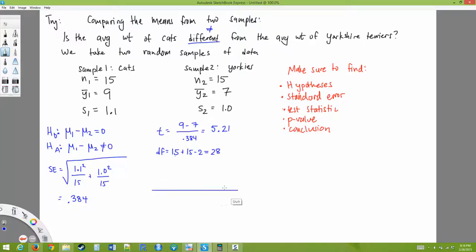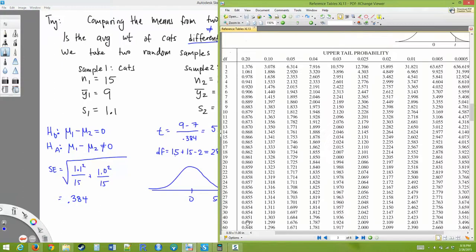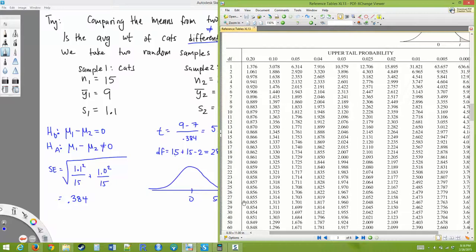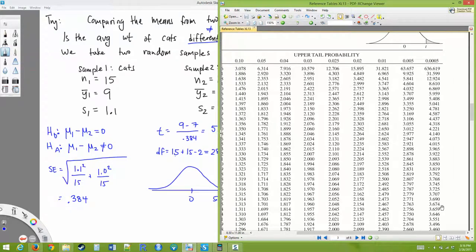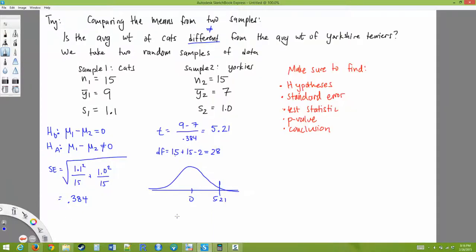And we'll just draw a little picture here. So I'm at 0, and I'm all the way out at 5.21. So 28 degrees of freedom, 5.21 is beyond the last number, 3.674. So I conclude that my area is less than 0.0005, okay?